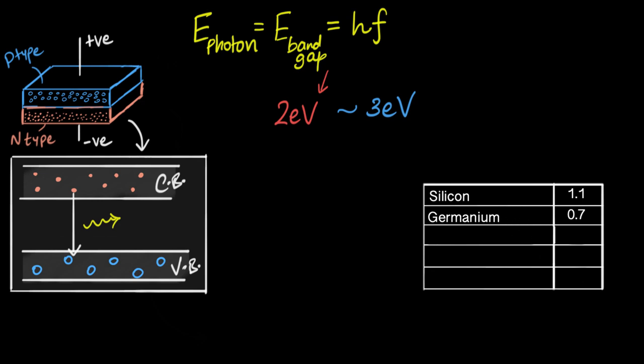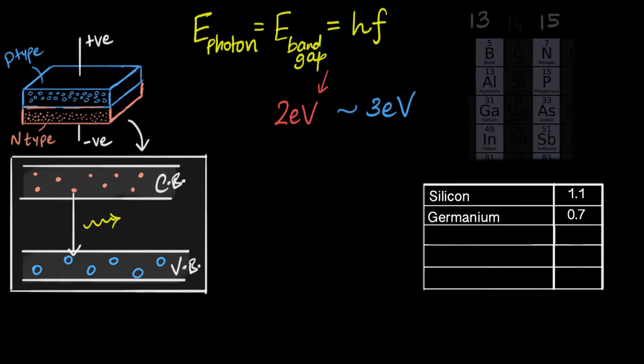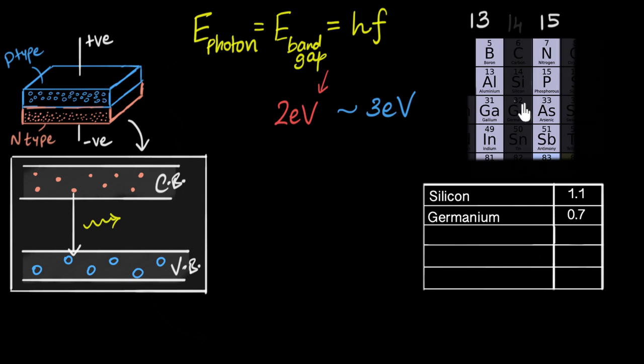Well, people soon figured out that you can mix elements and create your own semiconductors. The most common examples are by mixing group 13 elements with group 15 elements. For example, you can mix gallium with arsenic, or you can mix gallium with phosphorus, and you can make new semiconductors.